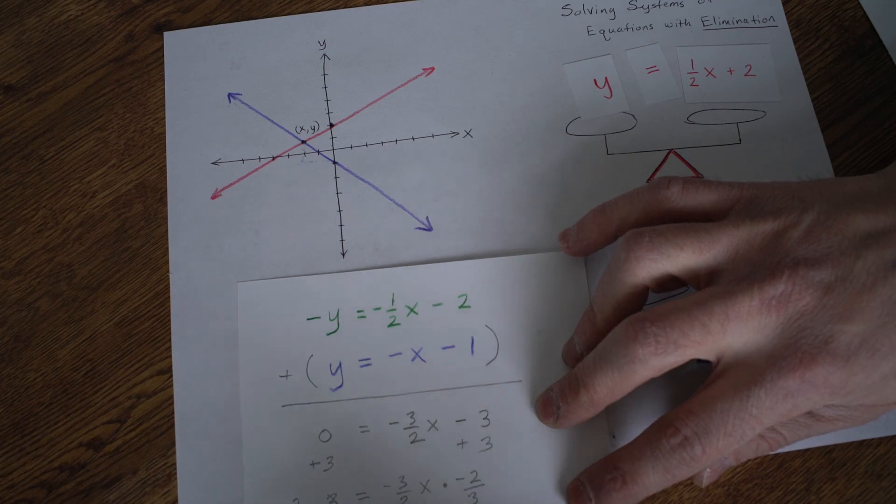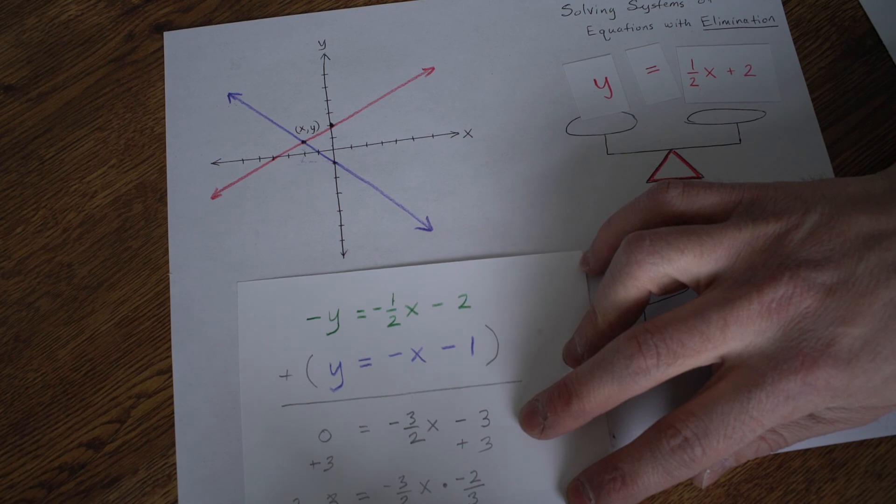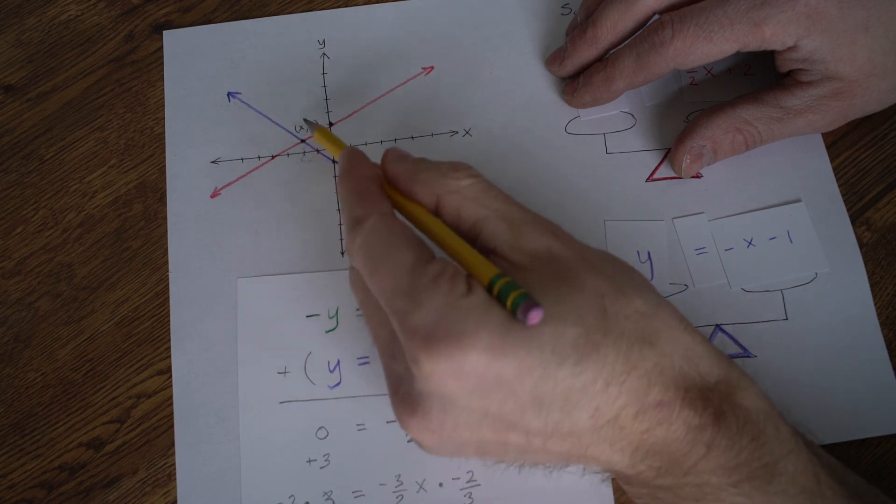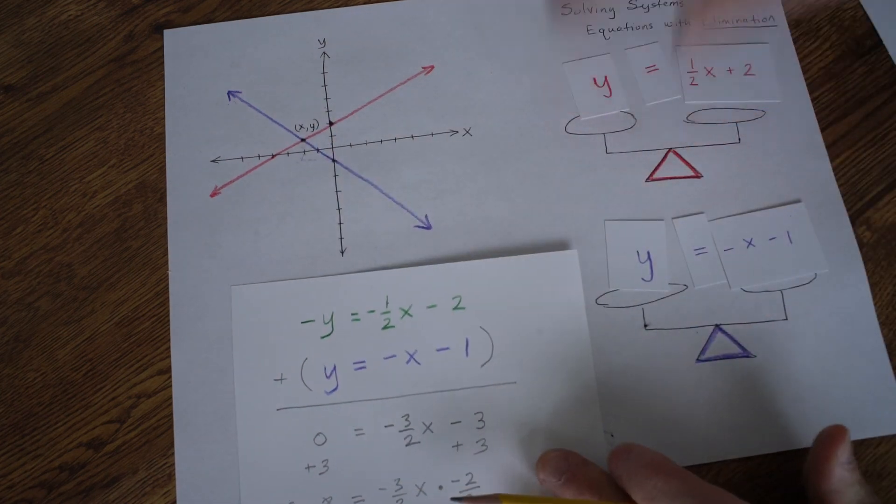And negative 6 over 3 is negative 2. So that checks out. So x equals negative 2. And we know that's to be true because we go negative 2 over to get to that point where they cross.